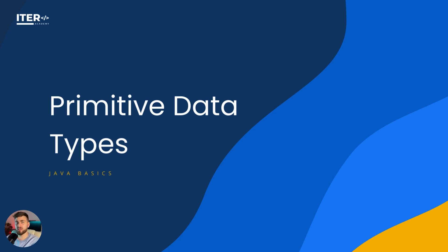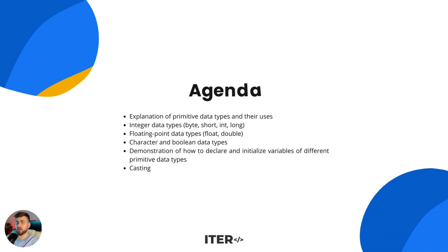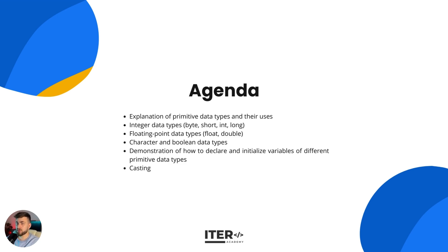Hello and welcome to the lesson. In this lesson we'll be covering primitive data types in Java. Primitive data types are the basic building blocks of any programming language and they are used to store simple values such as numbers, characters, and boolean values. We will also learn how to declare and initialize variables in Java.